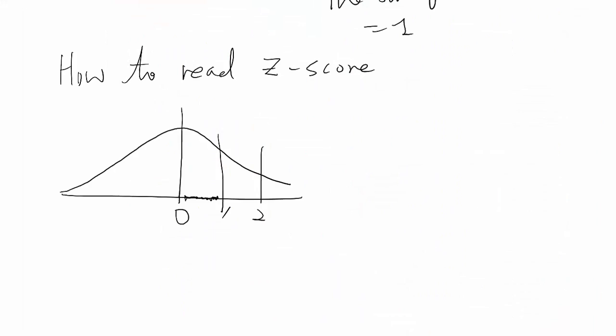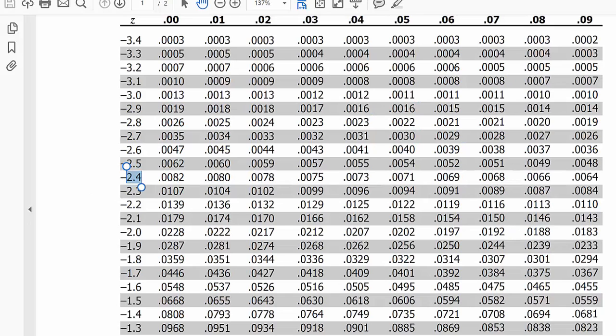Let's say we want to read z equal to negative 1.21. Then you have to find on the left column which is negative 1.21 first. So negative 1.2 first, which is here.